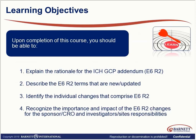At the end of this training you will be able to: explain the rationale for the addendum and why it came about in the first place; describe new or updated terms implemented in what is called E6R2, which I'll explain in more detail later; identify the individual changes that comprise the addendum; and recognise the importance and impact of those changes, not only for sponsors and CROs but also for investigators. Take a few seconds to note down any personal objectives you may have in addition to these, and feel free to type them into the chat box.